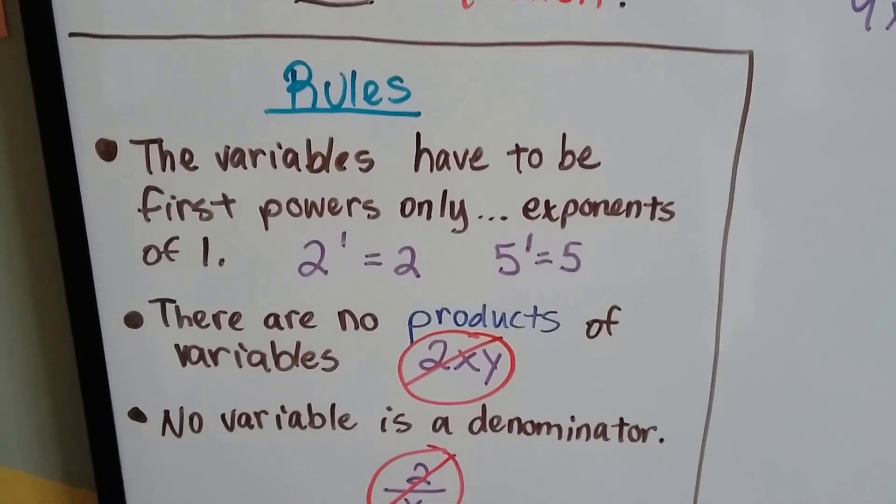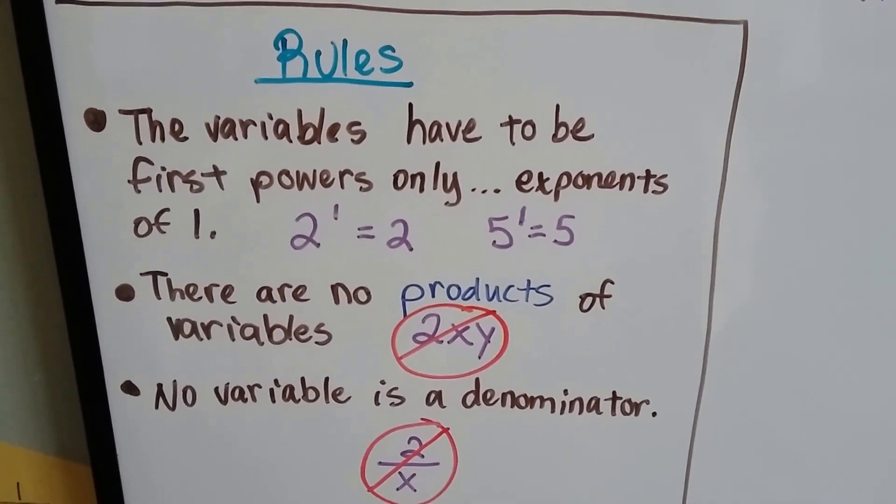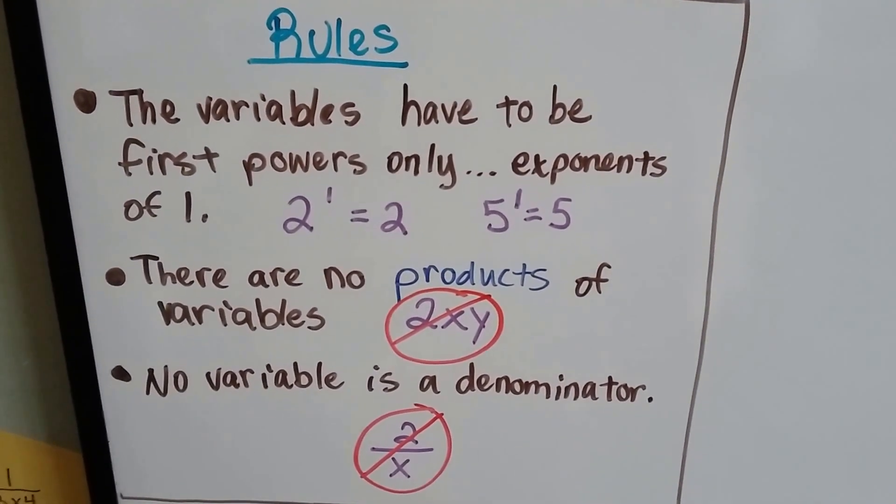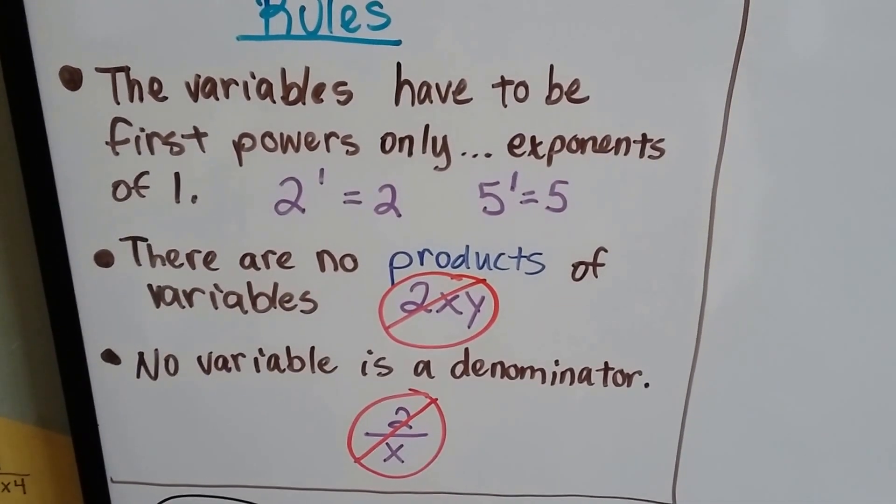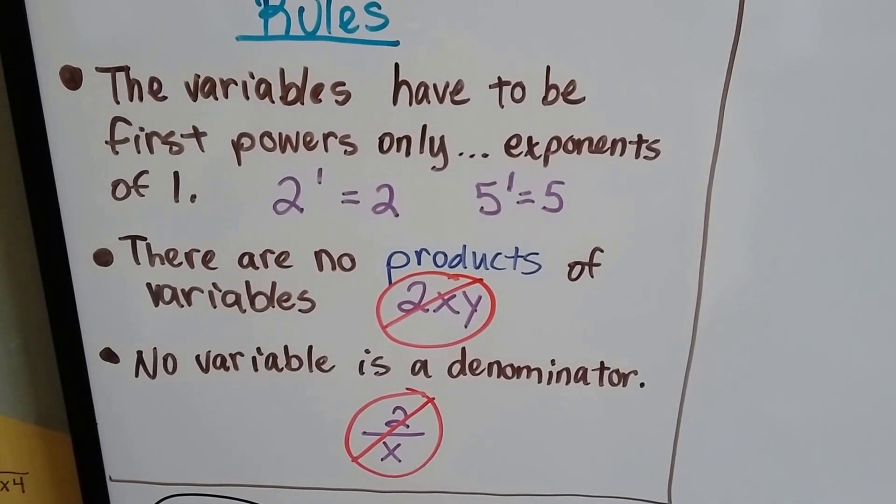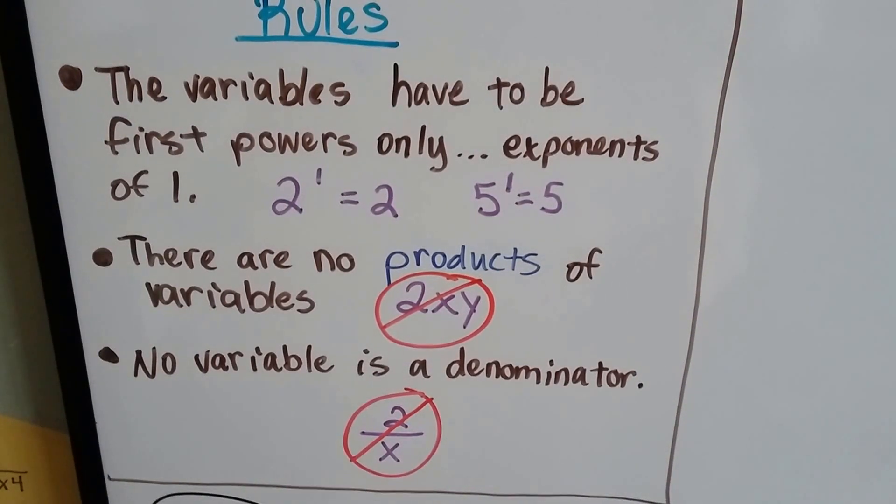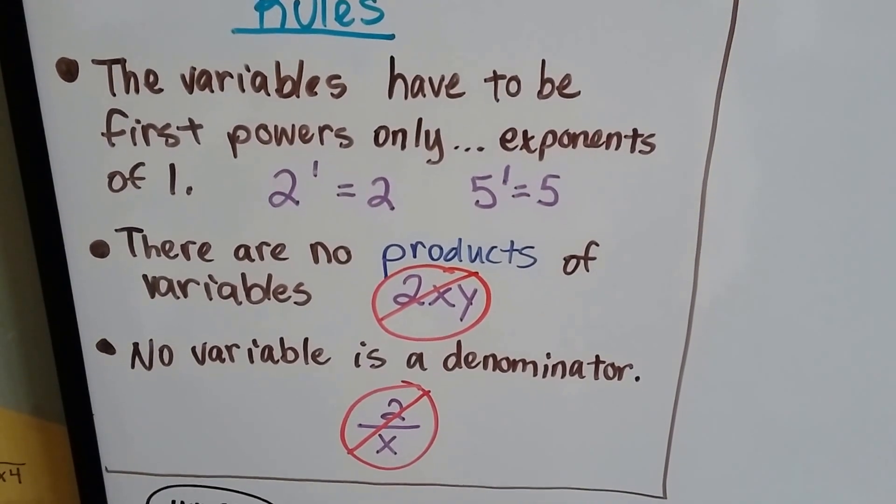So here's the rules. Variables have to be first powers only, so it can only have exponents of 1. There's no products of variables, so you can't have an x and a y next to each other because that's multiplication. And you can't have a variable as a denominator.